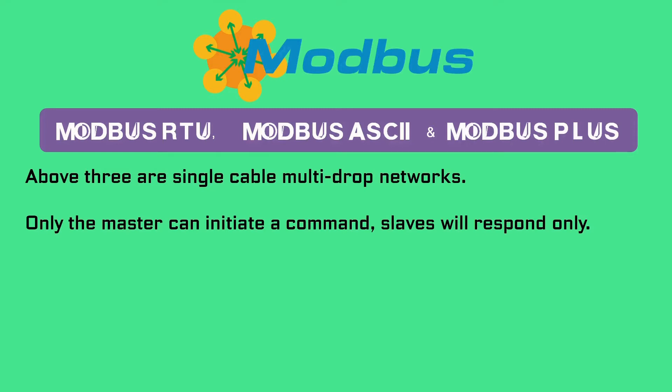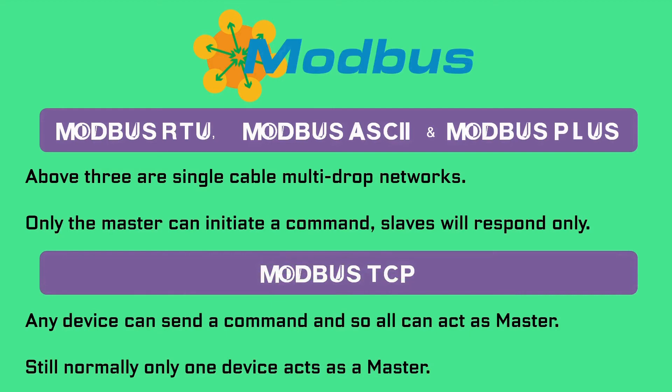In these three, only the node assigned as the master may initiate a command. All other devices are slaves and respond to requests and commands. For the protocols using Ethernet such as Modbus TCP, any device can send out a Modbus command, thus all can act as a master, although normally only one device acts as a master.